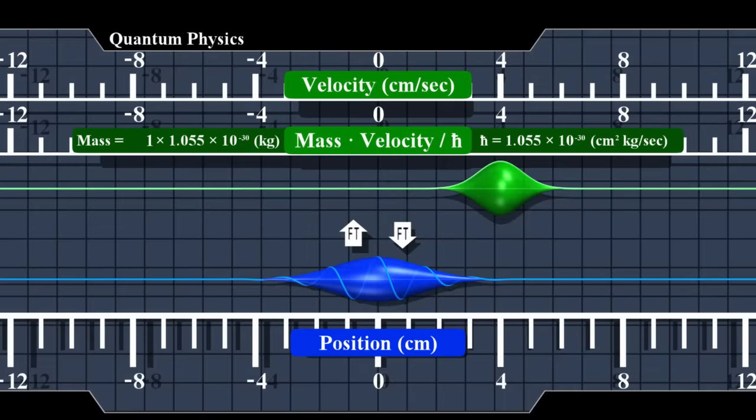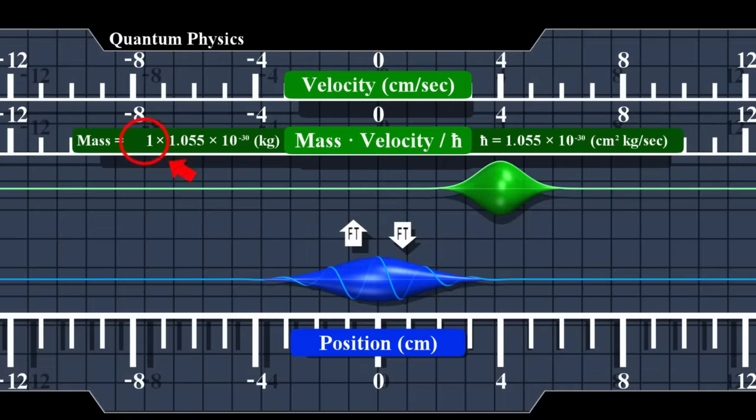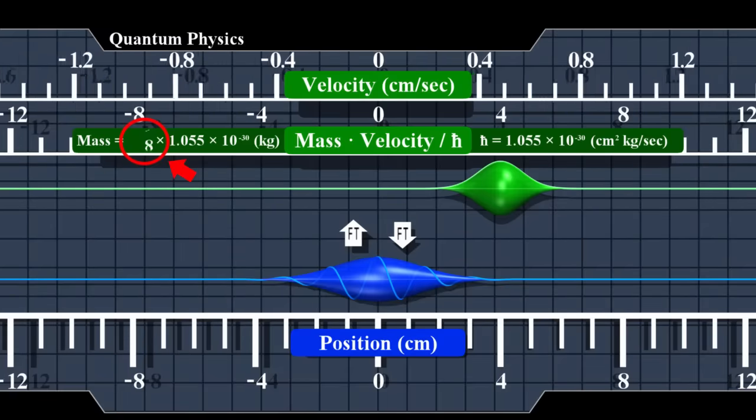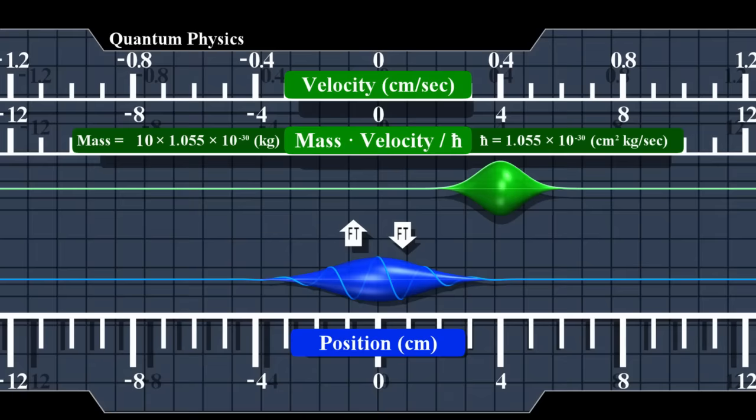Now let's increase the particle's mass. The two wave functions remain the same. The uncertainty principle is the same. But the same values of momentum now translate to much lower velocities. Let's shrink the upper part of the image to bring velocity back to scale.